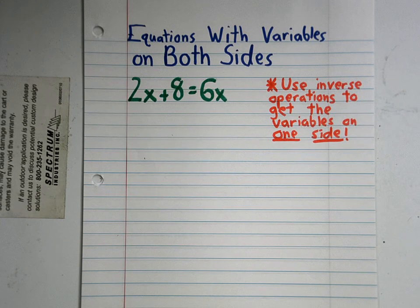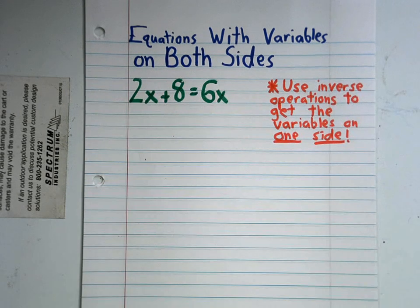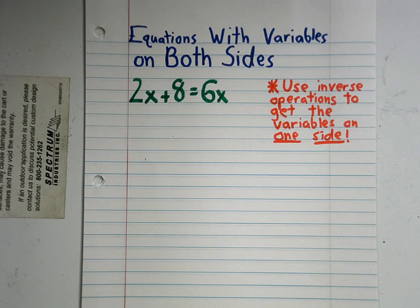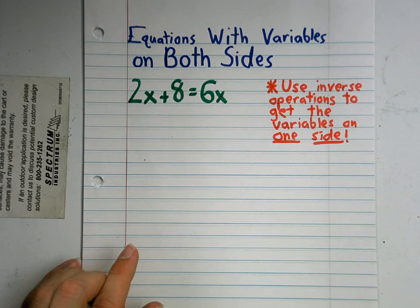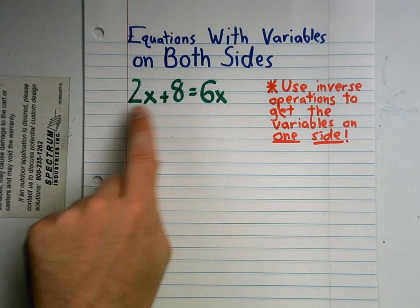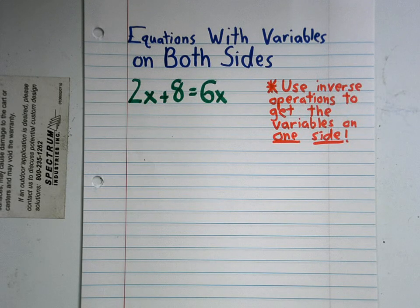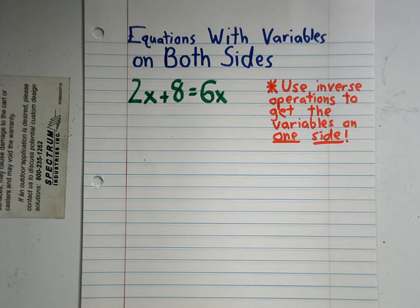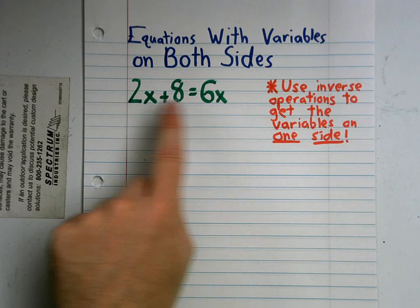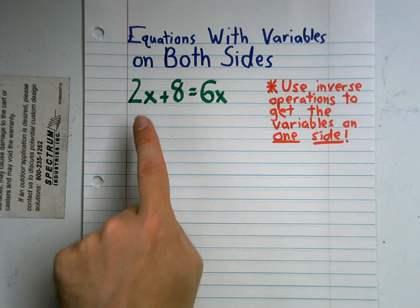We've done this plenty of times where we've had an equation that has a variable or an unknown number and we've solved using inverse operations to figure out what that variable is. When I gave you an equation like this earlier, I asked what makes it difficult — what makes you think you can't solve it. The answer was that there are variables, in this case x's, on both sides.